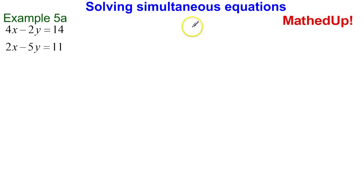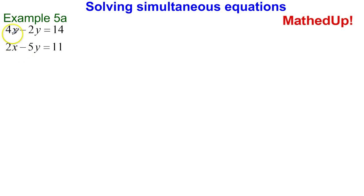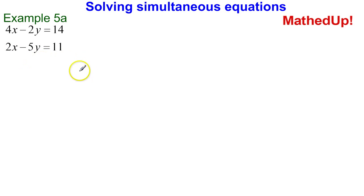We're looking at solving simultaneous equations by elimination, and this is example 5. Our two equations are 4x take away 2y is equal to 14, and 2x take away 5y is equal to 11. We're going to look at two ways of solving this pair of equations: first eliminating the x's, and then eliminating the y's, and check that either way we get the same solutions.